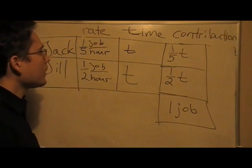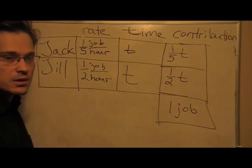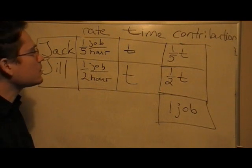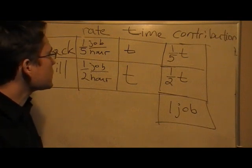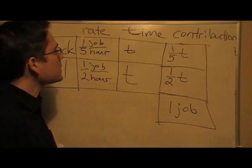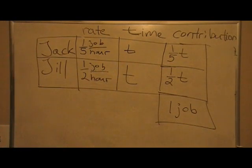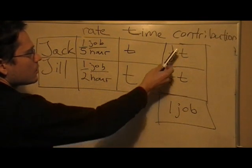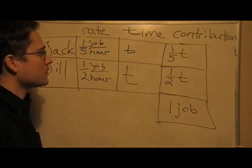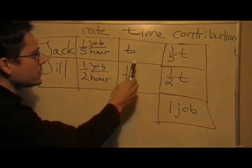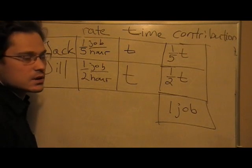Now, as time passes, both people work, and so each makes a contribution to the total completion of the job. Well, then we can say that one-fifth of a job per hour times the number of hours, which we call t, that Jack works. So, his contribution to the total completion of the job is one-fifth t. One-fifth of the time that they work. And t here is the total time that both work on the same job.